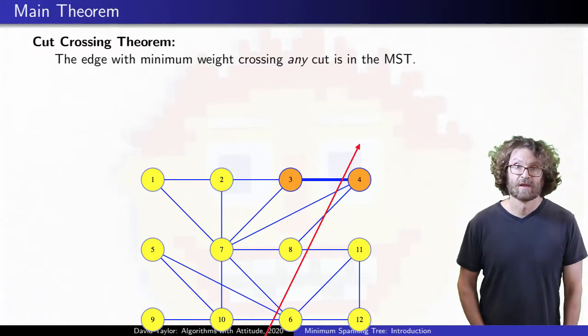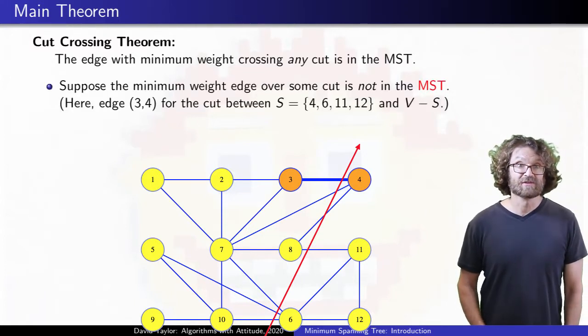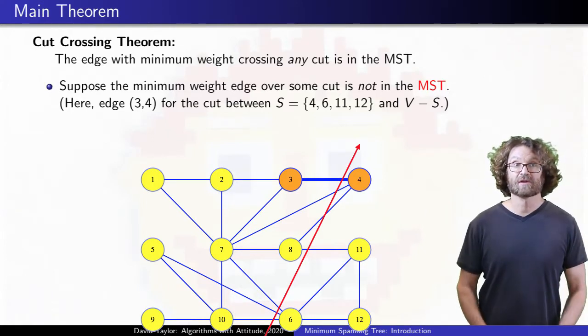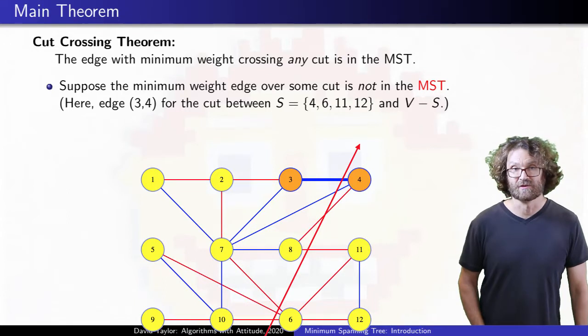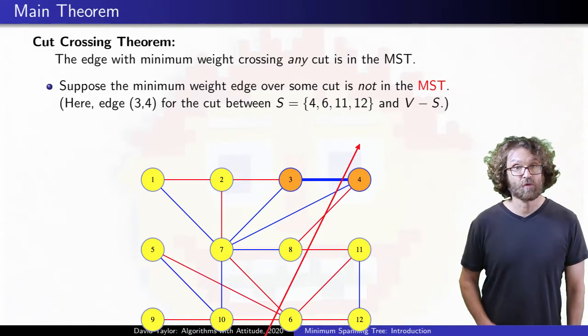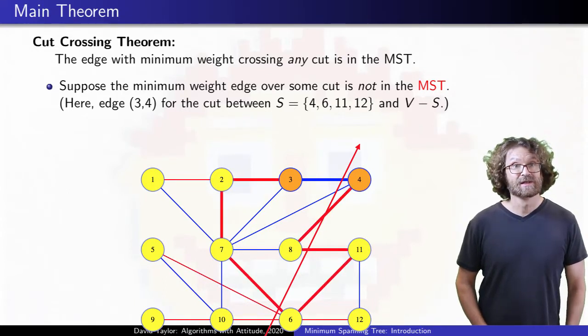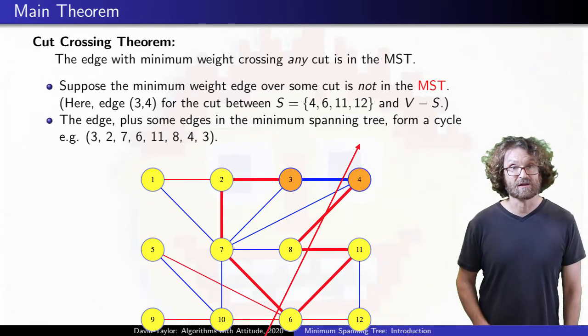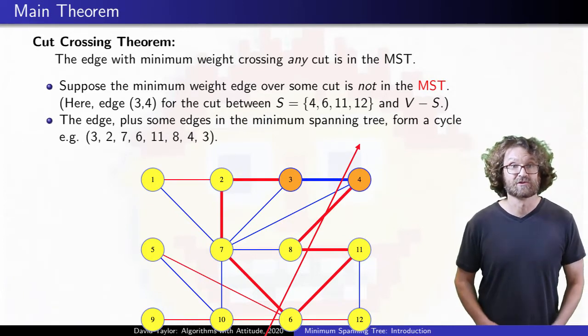By contradiction. If that edge isn't in the minimum spanning tree, then the minimum spanning tree is something else, let's say the red edges here. Notice, if we add the 3-4 edge to that tree, it has to complete a cycle with some of the edges of the tree.